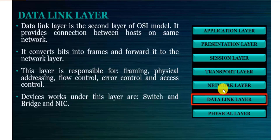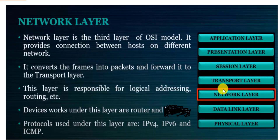The Data Link layer handles physical addressing — meaning MAC (Media Access Control) addressing — as well as flow control, error correction, and access control, such as MAC address filtering in wired or wireless networks to restrict which devices can connect. Devices that operate at the Data Link layer include network switches, bridges, network interface cards (NICs), and wireless access points.